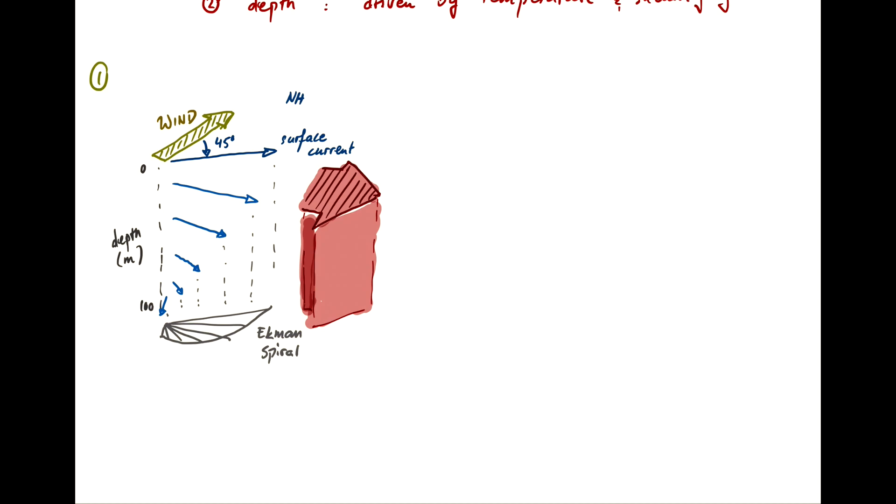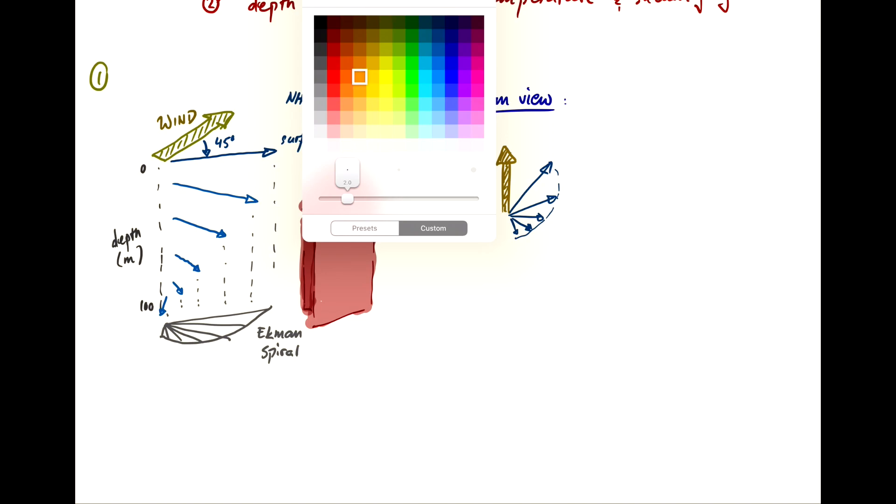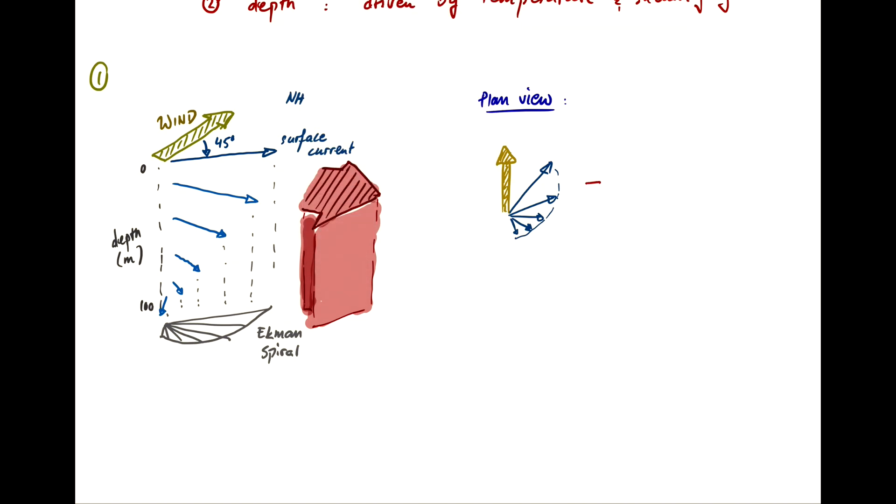So in plan view, you have the wind going in one direction, let's say straight north here, and the surface moves at 45 degrees in that direction, and then the depth lower down follow this spiral. And if you integrate over the top surface, over this whole spiral, then your transport is to the right.